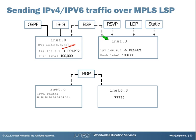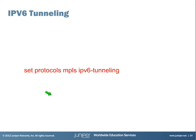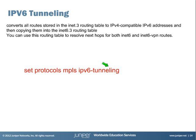Normally, the inet.3 table contains destinations for your LSPs created by LDP and RSVP, which makes us forward IPv4 traffic over IPv4 MPLS LSPs. When you move to IPv6, the default behavior is the same, but our inet.6.3 table is empty since we didn't create IPv6 LSPs. So how can we forward IPv6 traffic over IPv4 MPLS LSPs with an empty inet.6.3 table? The answer is simple: set protocols mpls ipv6-tunneling. Just one command does this magic. This command converts all the routes stored in the inet.3 routing table to IPv4-compatible IPv6 addresses and copies them into the inet.6.3 routing table.